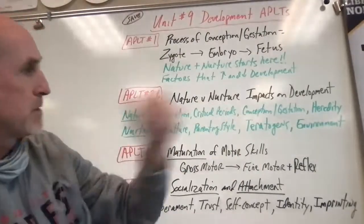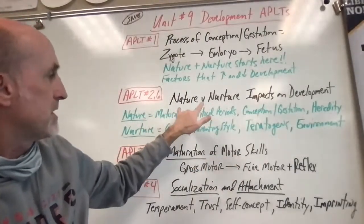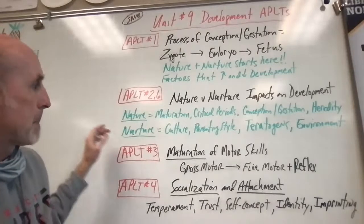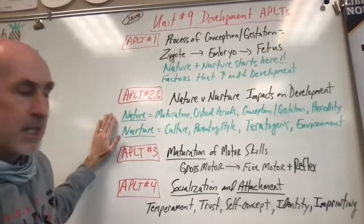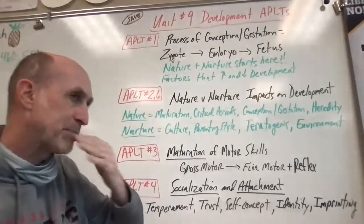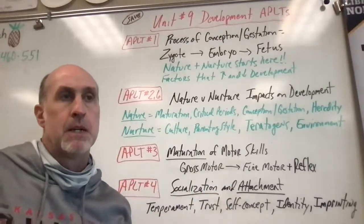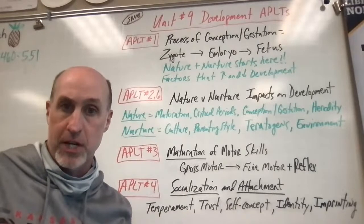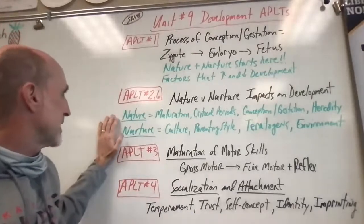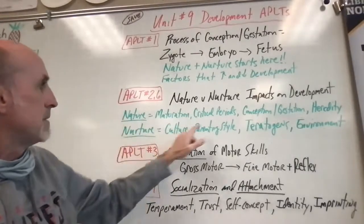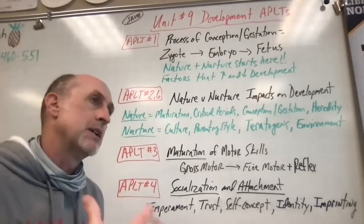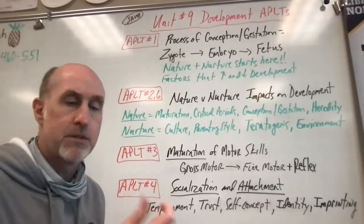AP Learning Target 2 and some of 6 cover nature-nurture impacts on development. Nature — which we generally refer to as maturation — is the biological change, the pre-programmed growth and development that we have. Development is how we change over a lifespan, while maturation is the biological, pre-programmed side of that. Critical periods are important: the brain is programmed at certain times of your lifespan to develop certain things. Language is a great example — the critical period for language is generally birth to age 7.